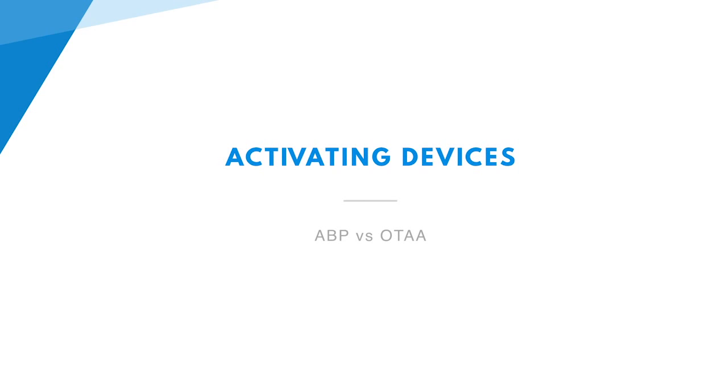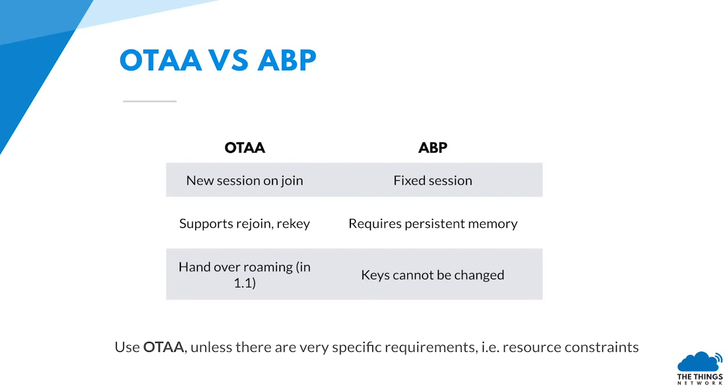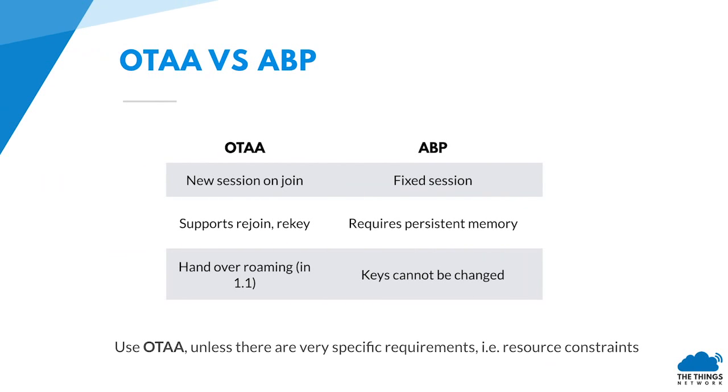In LoRaWAN there are two ways to activate your device. First is over-the-air activation (OTAA), and the second is activation by personalization (ABP). In OTAA there are new session keys on join, and in ABP you have fixed keys. Over-the-air activation supports join through a join server, and the join server holds the root keys. The join server can be a solution provider, the owner of the solution, or a trusted third party. Only the session keys are shared with the network operator — the root keys are only in the join server.